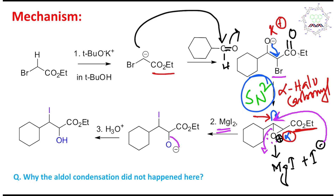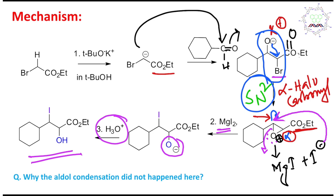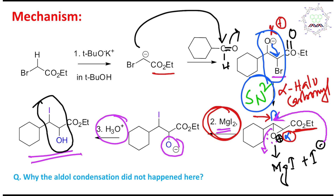After ring opening, one side gives iodo and the other gives O-minus, which after workup gives a hydroxyl group. This type of molecule, with iodo and hydroxyl in a 1,2-relationship in trans orientation, is called a halohydrin — or more specifically, an iodohydrin.